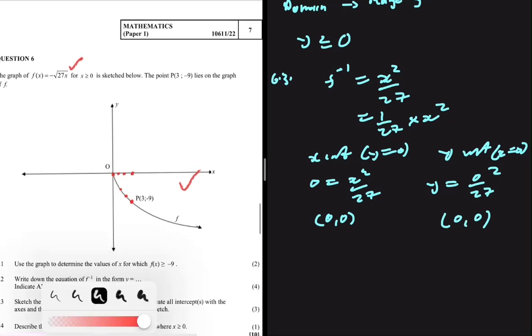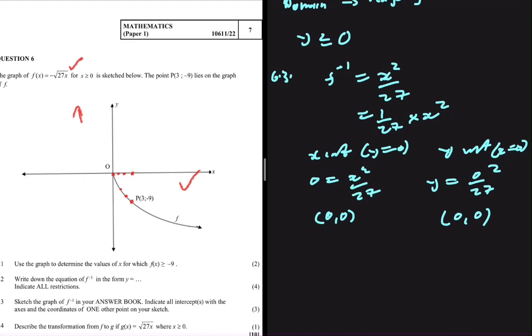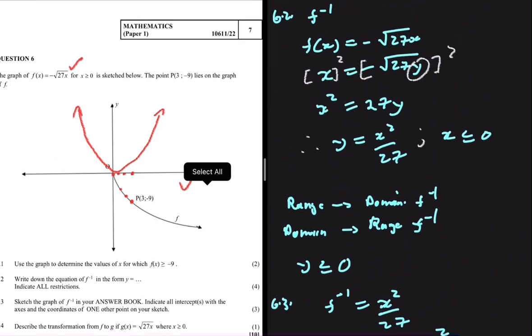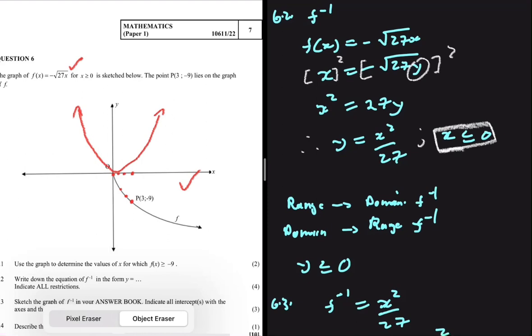So that is to say that our graph should look something like this. But then, let's not forget that we have a restriction. Our restriction is that we're only interested in the values of x for which x is less or equals to 0. So we actually don't have this part on our function. Because at that point, x is now greater than 0. This is only the part we're interested in on our inverse. So this is our graph.